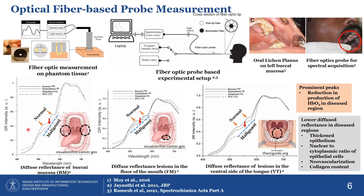The intensity of diffuse reflectance — light scattered and detected by the probe — is significantly lower for cancerous tissue compared to normal tissue. This is because cancerous tissue has high collagen content, which results in more scattering and loss of photons before they are captured. That is why the reflectance is lower for malignant tissues.